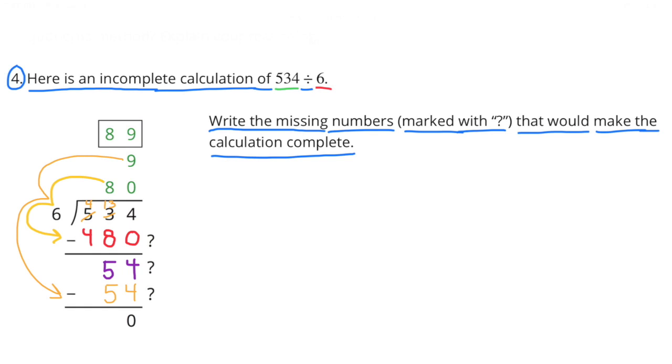And at the top, 80 plus 9 equals 89. 534 divided by 6 equals 89.